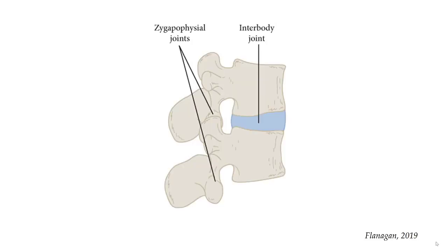Now let's take a look at the vertebral column. The basis of movement is the functional spinal unit, which consists of two vertebrae and the disc in between them. The name is based on the vertebrae that make it up, designated by a letter for that region and then the numbers of those vertebrae. For example, the functional spinal unit L4-L5 is made up of the fourth and fifth lumbar vertebrae.